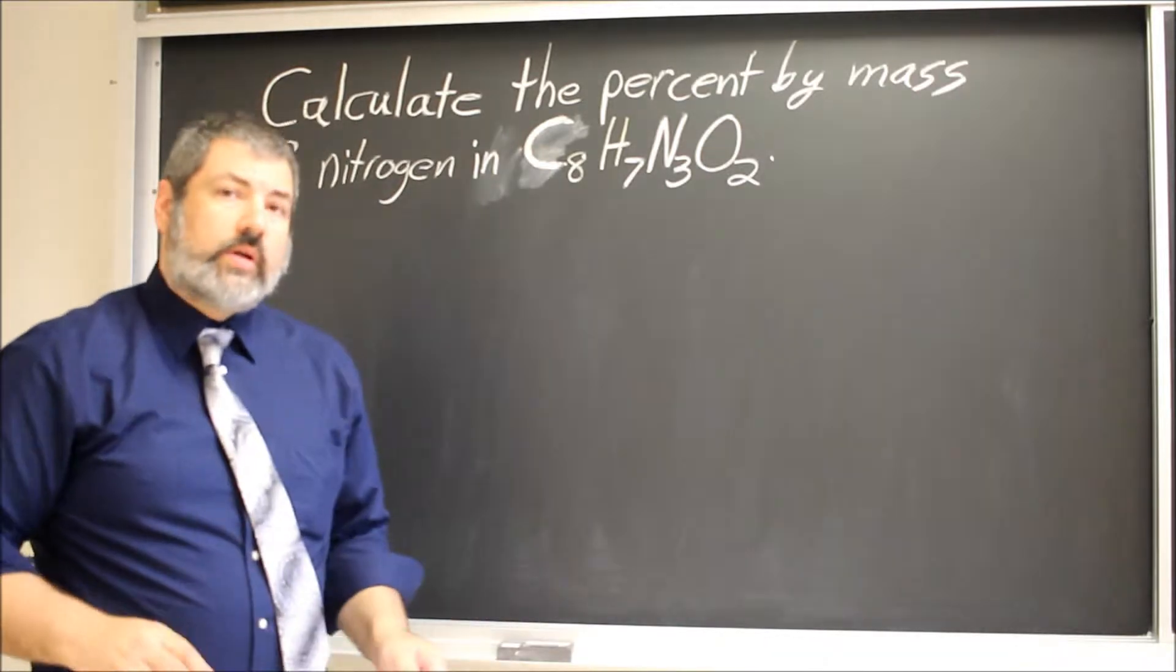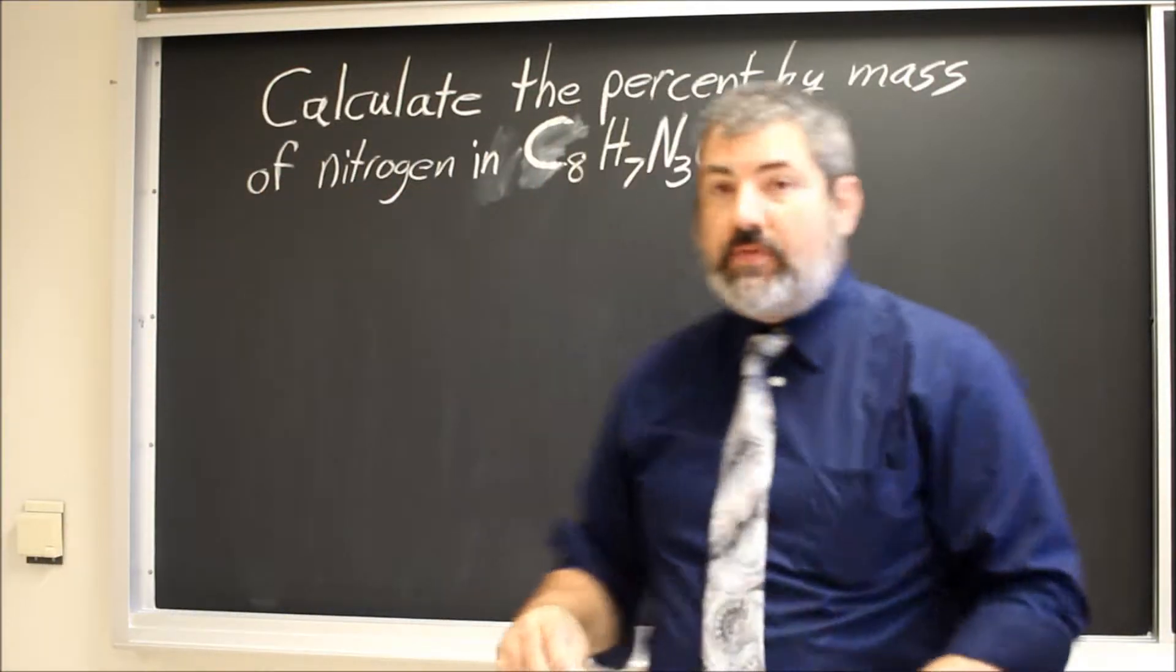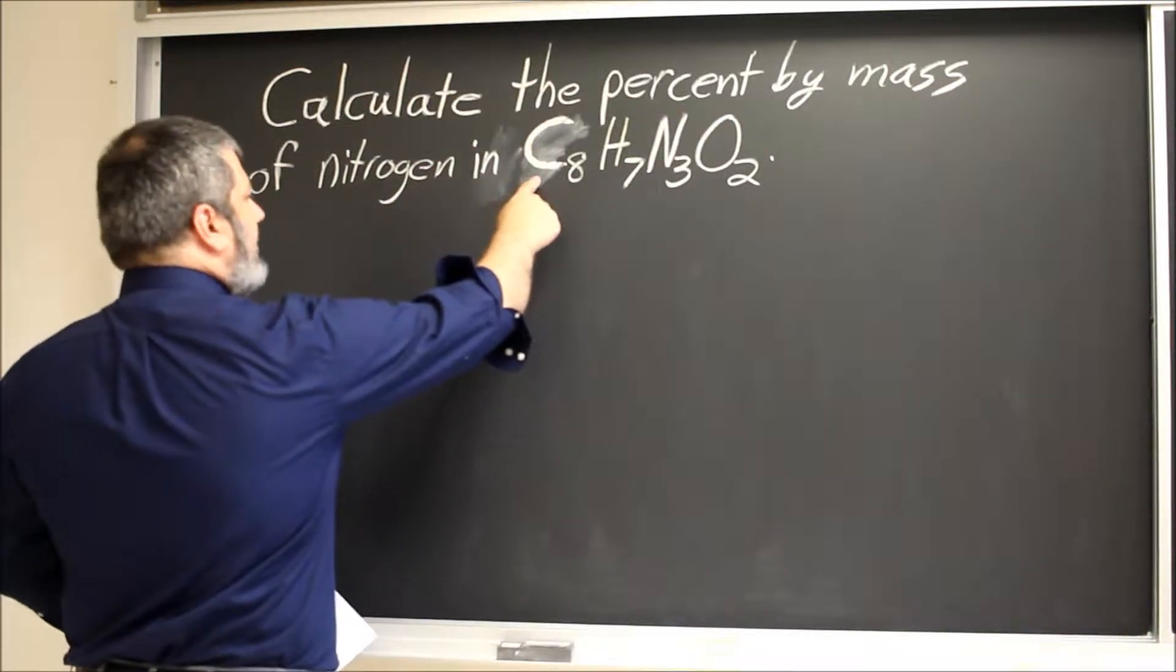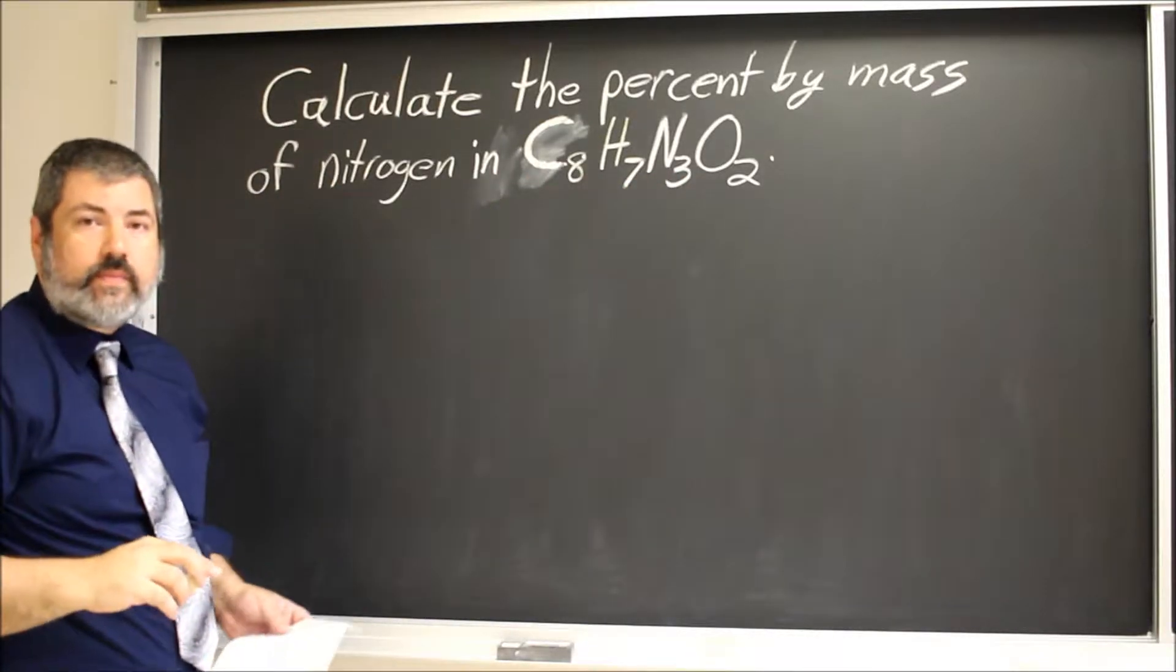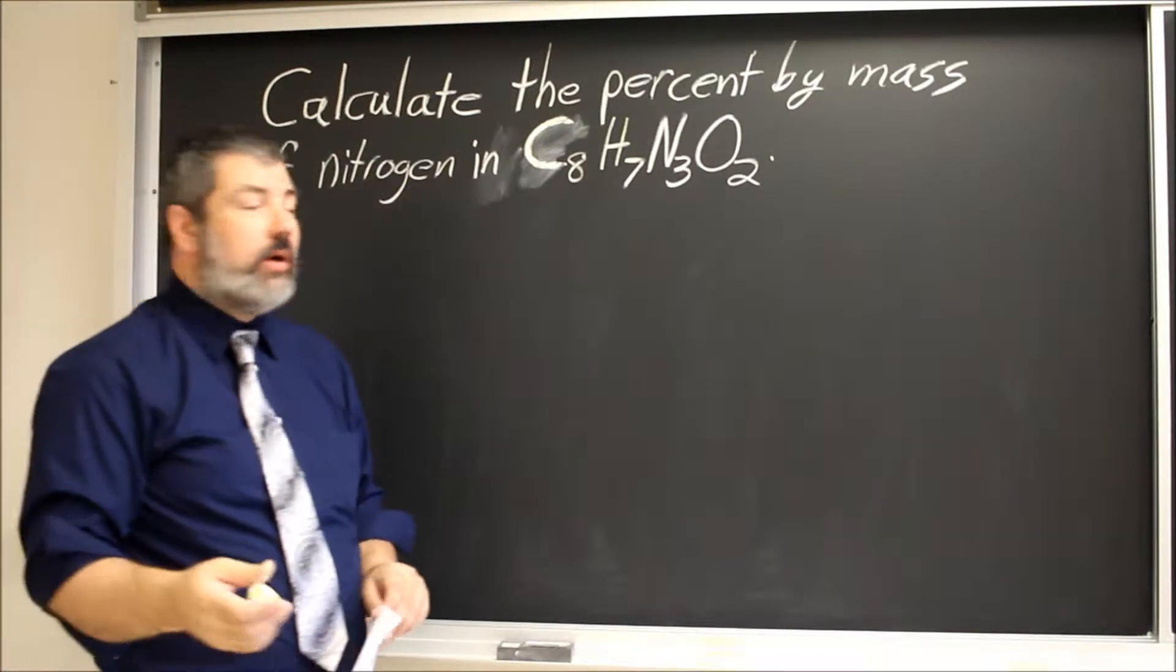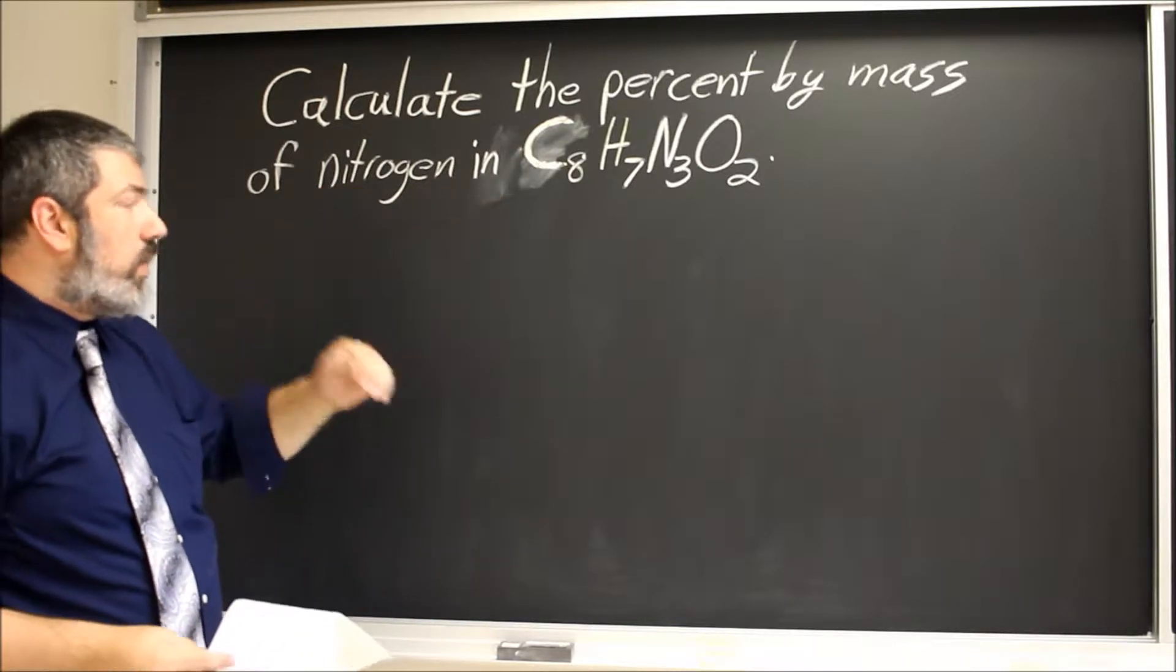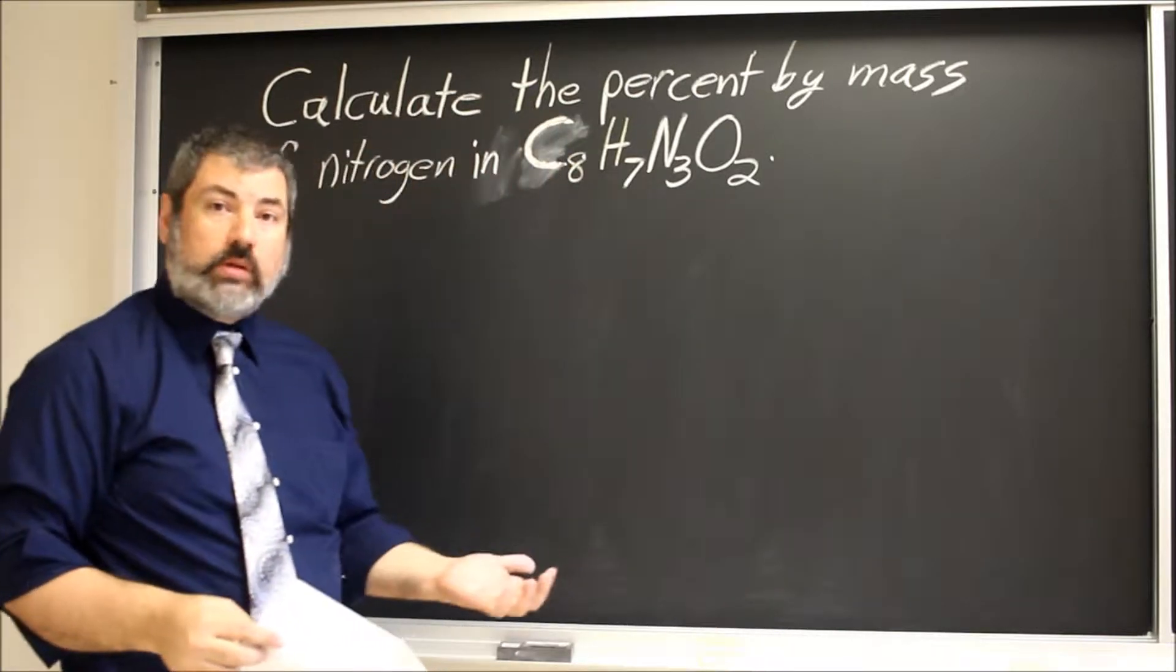So for this problem I want to work through another percent by mass type of calculation. If we have C8H7N3O2, which is the molecular formula of the organic compound luminol, and we want to calculate the percentage of nitrogen in this molecule, we first have to break down the molecule in terms of molar mass.